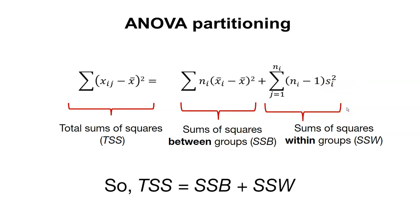Large values of the sums of squares between groups reflect large differences in the treatment means. If we have small values of the sums of squares between groups, we don't likely have any differences across the different treatment means. This is a handy way of thinking about how we might partition the variability in our analysis of variance.